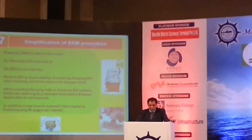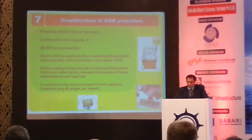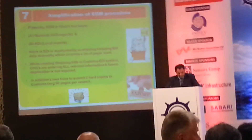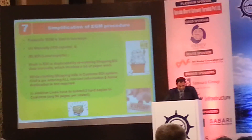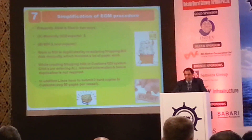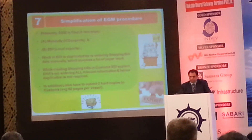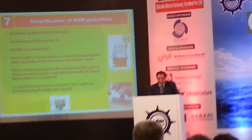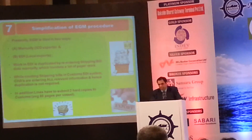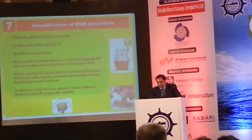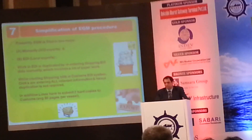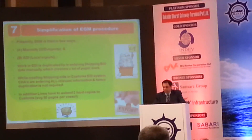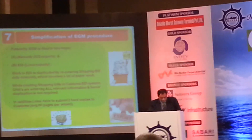The Export General Manifest (EGM) procedures are filed in two ways: for ICD exports it is manual, and for local exports it is in EDI format. The EDI format AGM from the shipping line carries various fields — shipping bill number, shipping bill date, rotation number, rotation date, number of packages, etc. All this information is available in the customs system, filled up by the CHA. The shipping line has no control or knowledge — it is just a copy-pasting job.